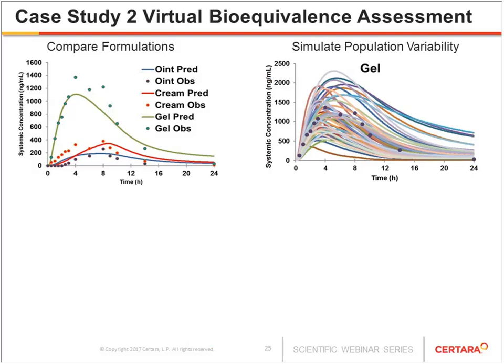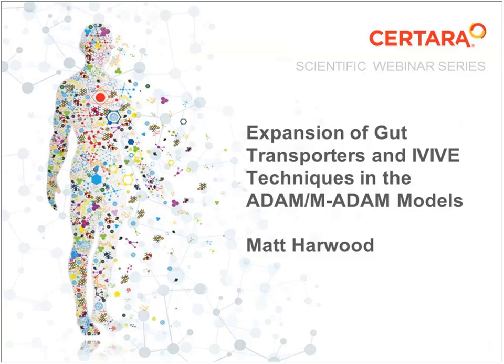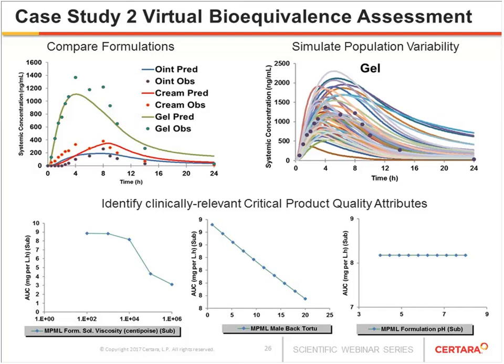The model allows identification of clinically relevant critical product quality attributes. For example, for one formulation, viscosity is very important in affecting AUC, while pH of the formulation has little effect on exposure — meaning viscosity may need to be tightly controlled during manufacturing compared to pH. It also allows understanding of physiological parameter impacts like tortuosity of the stratum corneum pathway. We are writing this up as a series of publications as the ultimate aim of the FDA research grant, so more publications should be available to a wider audience next year.